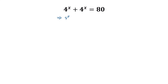we can write 4 to the power x. And 4 to the power x divided by 4 to the power x is 1, so here it will be 1 plus 1. So 4 to the power x times 1 plus 1, which is 2, is equal to 80 on the right side.